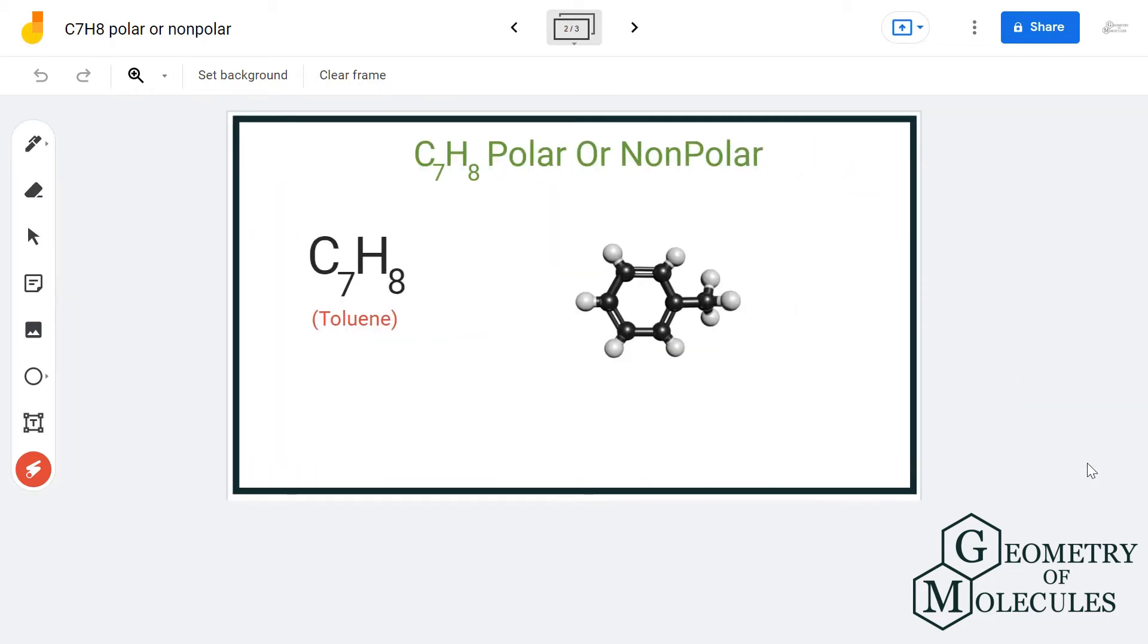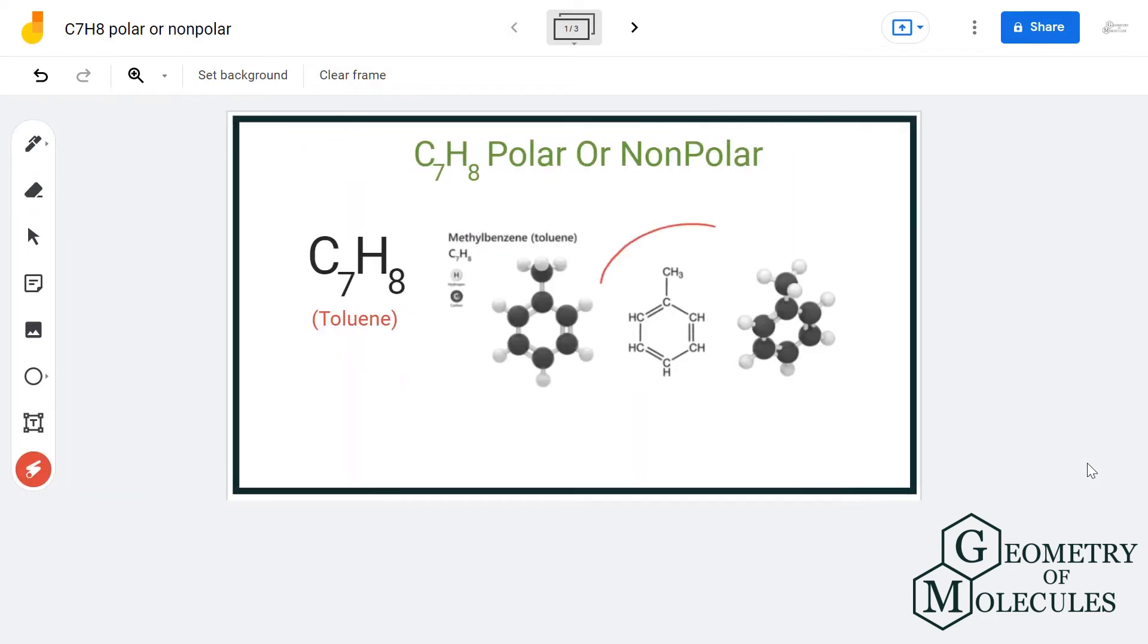Hydrogen has an electronegativity value of 2.20, and for carbon it is almost 2. So the difference is almost 0.2, which is less than 0.4, which means that the bonds are not polar, or they are only slightly polar.